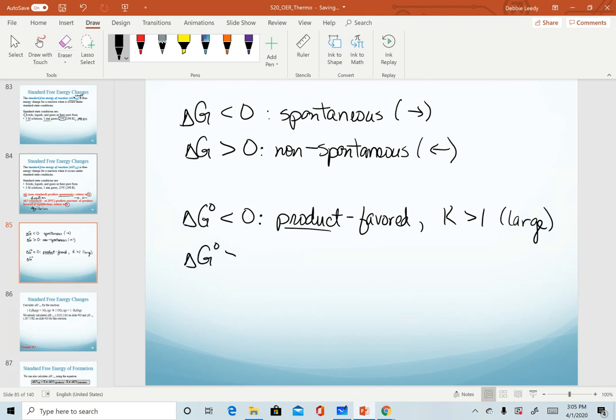If we calculate that delta G NOT, the standard value, is positive, this tells us that once our system has reached equilibrium, we have a reactant favored system. Because that relates to equilibrium, we can relate it back to a K value where K is less than one, or we have a small value. The more negative a delta G value is, the larger the equilibrium constant would be. The more positive a delta G NOT value is, the smaller our K value would be.